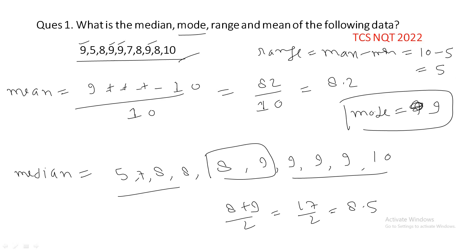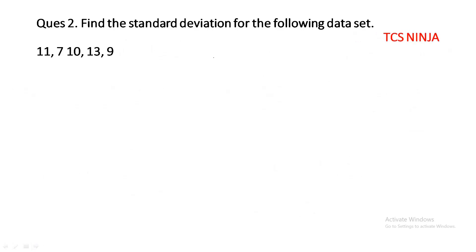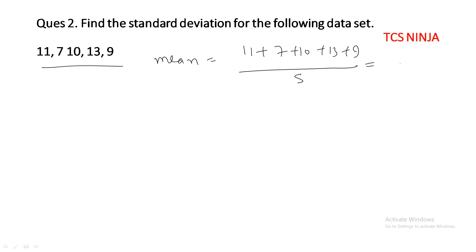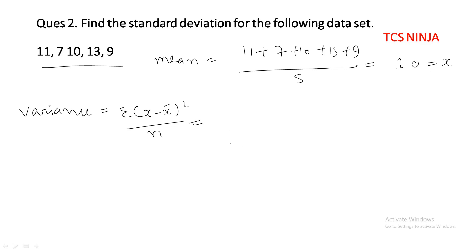Moving on to the next question: find the standard deviation for the following data set. To find standard deviation, we first find the mean, then variance, then standard deviation. The mean is (11 + 7 + 10 + 13 + 9) divided by 5, which equals 10. The formula for variance is: variance equals summation of (x minus x-bar) squared, upon n.